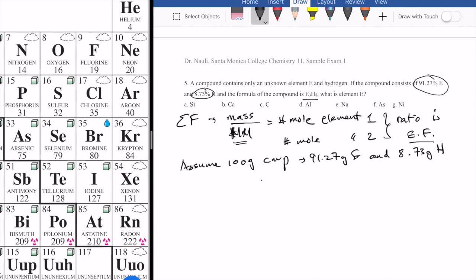Typically what we'll do is we would get the number of moles of E would be 91.27 divided by its molar mass. We don't know what it is, so we're going to try to find that out. And then the number of moles of hydrogen is just